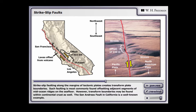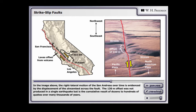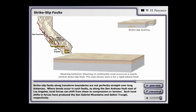The San Andreas fault in California is a well-known example. In the image above, the right-lateral motion of the San Andreas over time is evidenced by the displacement of the streambed across the fault. The 130-meter offset was not produced in a single earthquake but is the cumulative result of dozens to hundreds of quakes over many thousands of years.